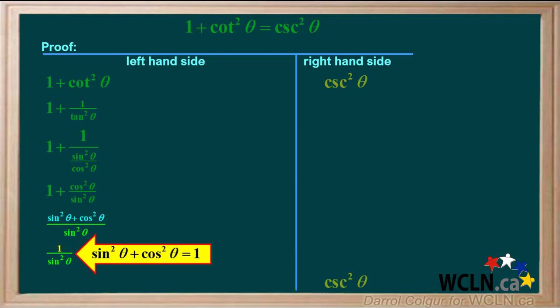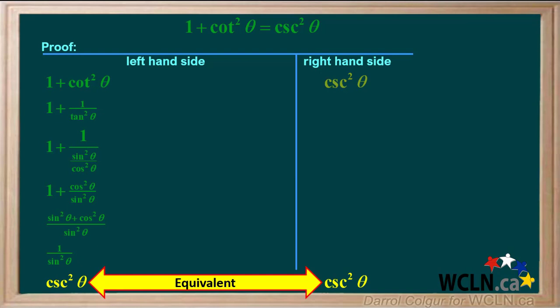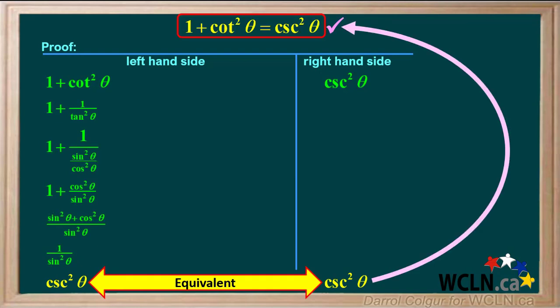We can use the Pythagorean identity sin squared theta plus cos squared theta equals 1 to give us 1 over sin squared theta. 1 over sin theta equals cosecant theta, and squaring both sides gives us 1 over sin squared theta equals cosecant squared theta. We see the two sides are equivalent, so this proves that 1 plus cotangent squared theta equals cosecant squared theta is an identity.